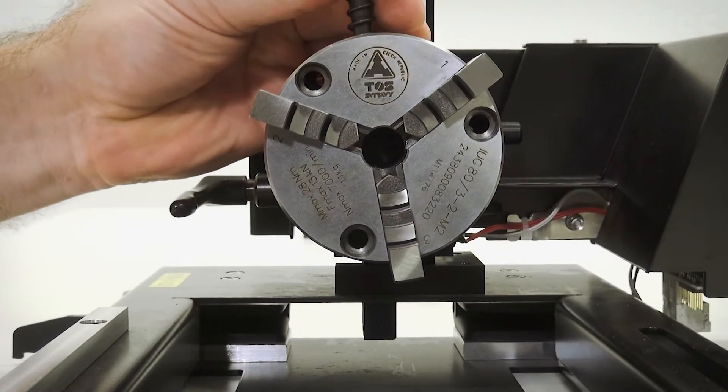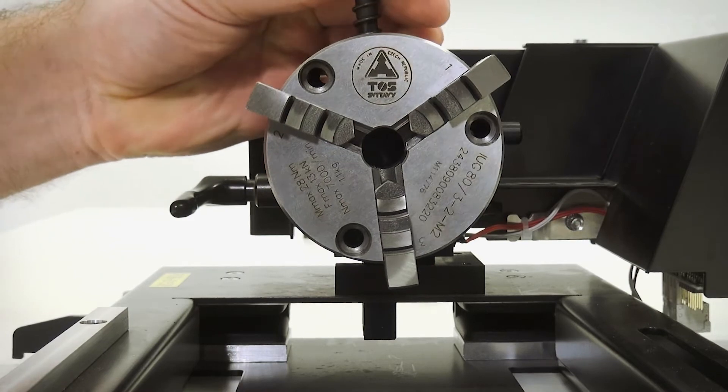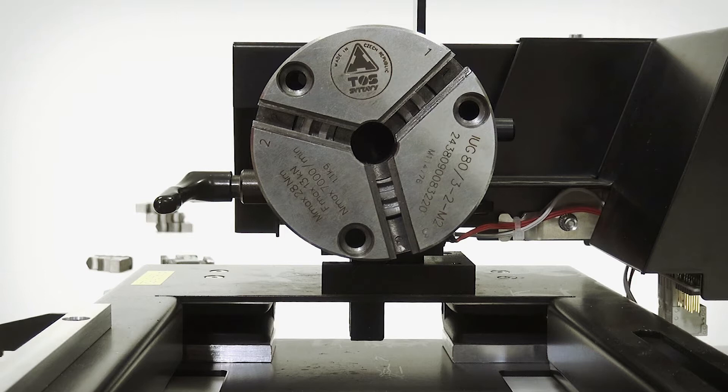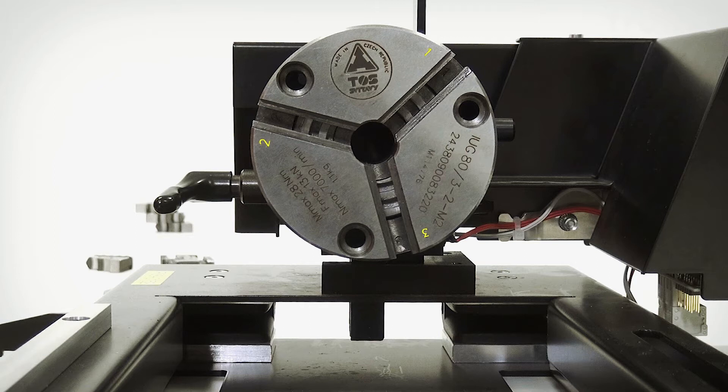To replace the jaws, you need to open the chuck fully and remove them. As you can see here, there is a spiral pattern inside the chuck. Each of the jaw slots are marked with a number, and it is important that you start with slot one using jaw number one, then do jaw number two and then finally number three.